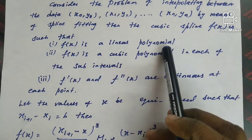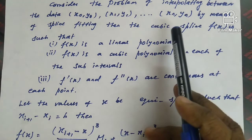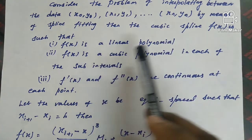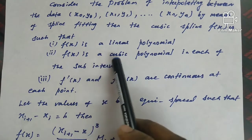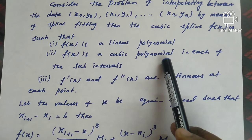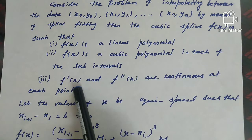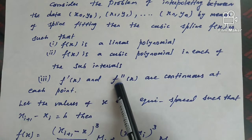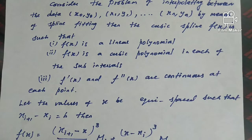f(x) is linear beyond the interval [x0, xn]. Within each subinterval, f(x) is a cubic polynomial — that is, a polynomial of degree 3. And f'(x) and f''(x) are continuous at each point. These are the basic properties of cubic spline that we should remember.